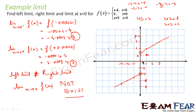We can also see this from the graph: at x equal to 0 there is a break — it is not continuous. For any point in the graph where it is continuous, such as x equal to 3 or x equal to 2, the limit will exist. But for any point where the graph is not continuous or not defined, the limit does not exist.